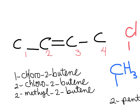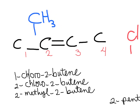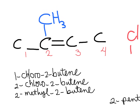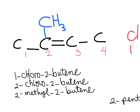If instead of having a chloro, I change the position and place the methyl group on carbon number two, now I will be building 2-methyl-2-butene.